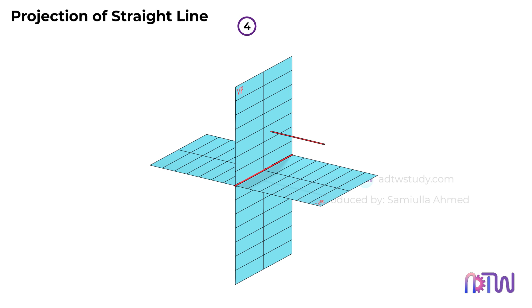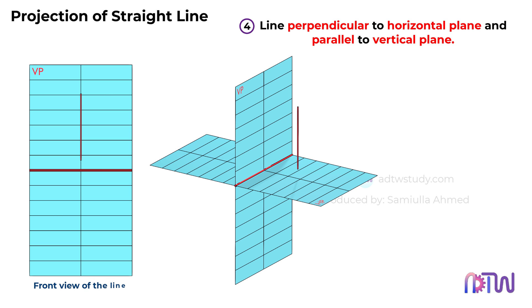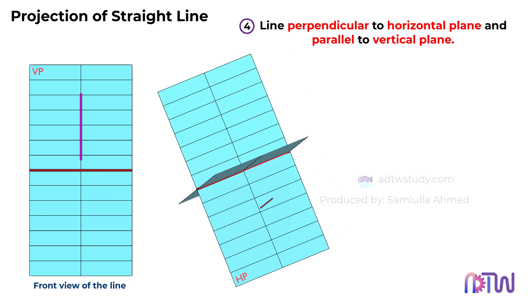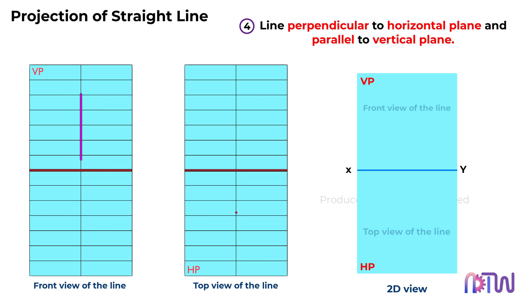Proceeding to Position 4: the line can be perpendicular to the horizontal plane and parallel to the vertical plane. In the 3D view, the front view shows the line as a straight line, while from the top view it takes on the form of a dot — a notable contrast to Position 3. In the 2D view, we sketch a straight line for the front view positioned at a distance above the XY line, and the top view is represented as a point below at an X distance. The front and top views will always maintain alignment with each other.